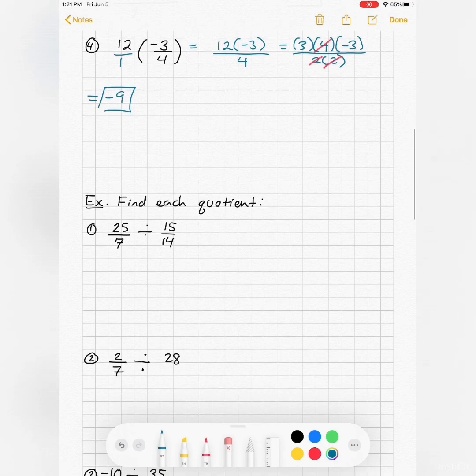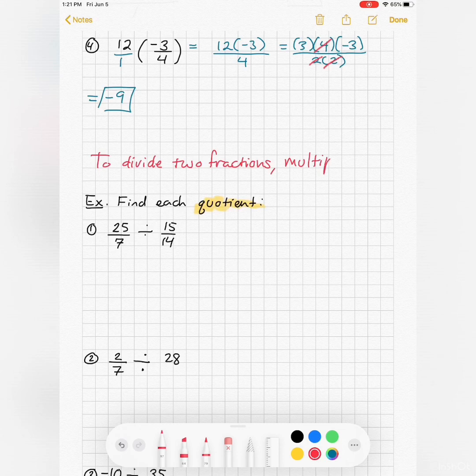Find each quotient. In other words, divide. So to divide two fractions, multiply by the reciprocal of the second.